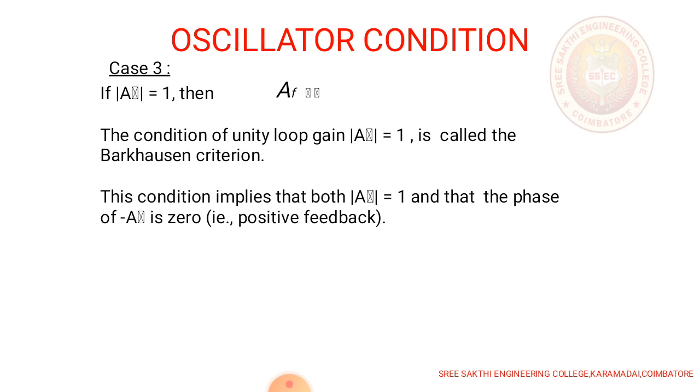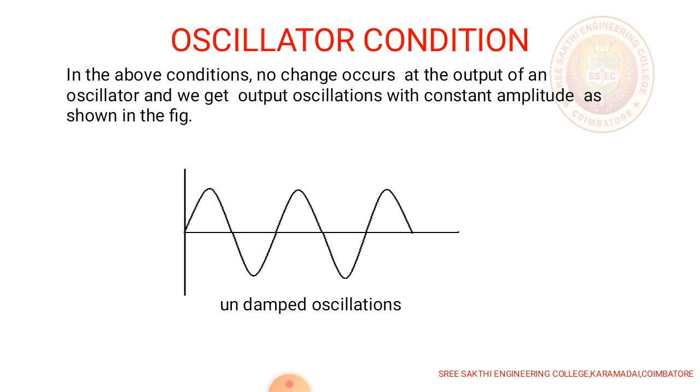Third condition is our Barkhausen criterion. Modulus of A beta equal to 1. Then AF is equal to infinity. The condition of unity loop gain, modulus of A beta equal to 1, is called as Barkhausen criterion. This condition implies that modulus of A beta is equal to 1 and phase of A beta is 0. That is positive feedback. In the above condition, no change occurs at the output of the oscillator and will get output oscillations with constant amplitude.